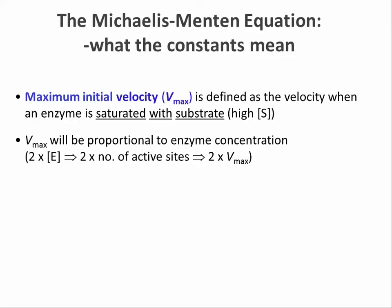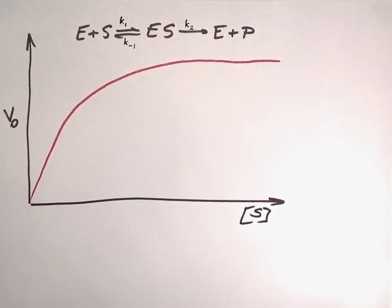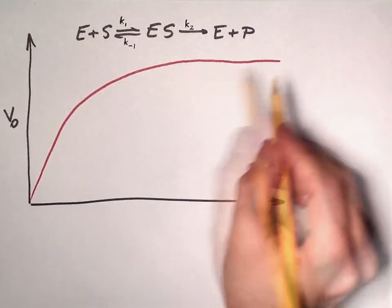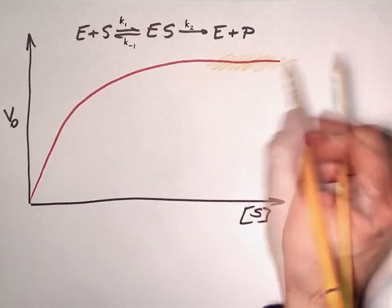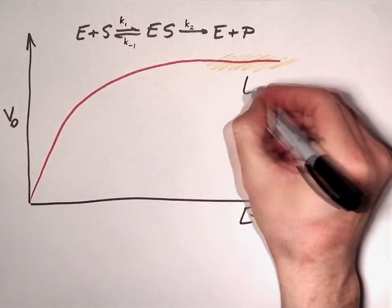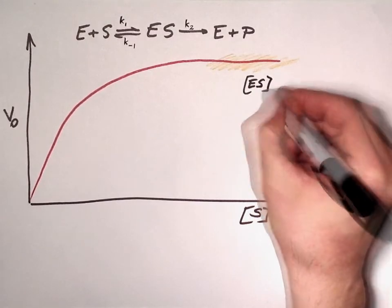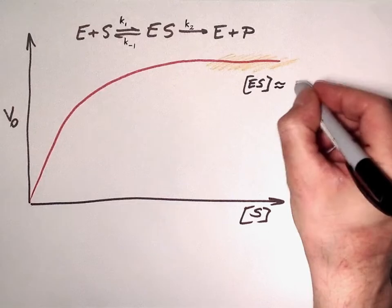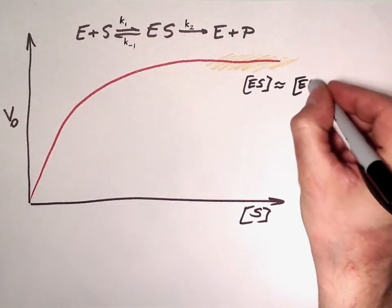When we come to the outer edge of this V0 versus S plot, we said earlier that the reaction becomes zero order with regard to the substrate concentration, which means that at nearly saturating substrate concentrations, changing S hardly affects the initial rate. Nearly all active sites are now occupied, so the concentration of ES is pretty much equal to the total enzyme concentration here.